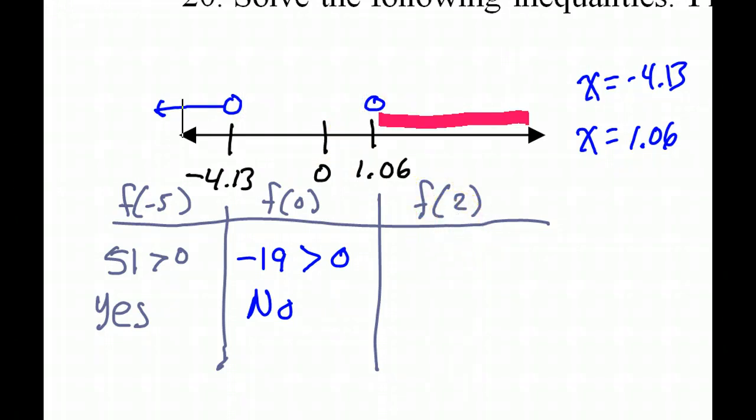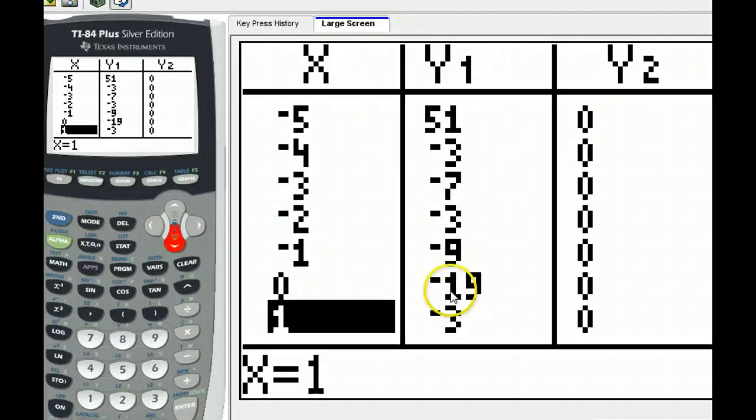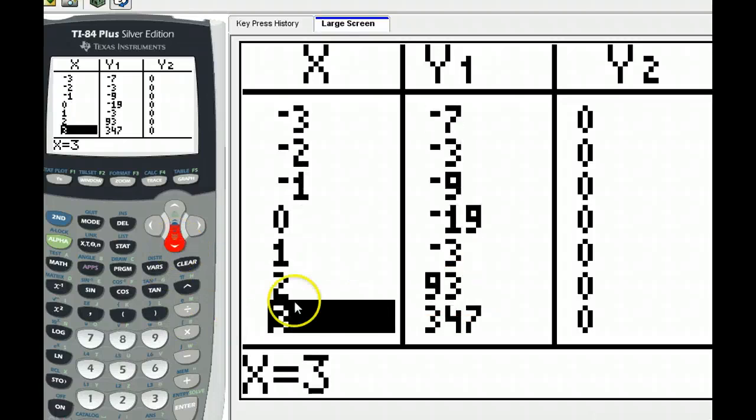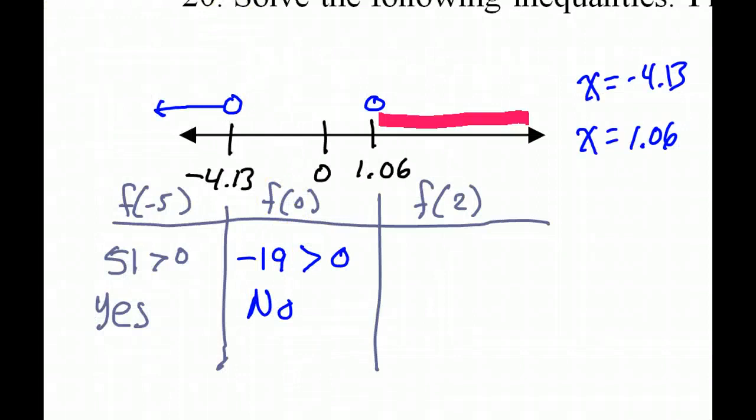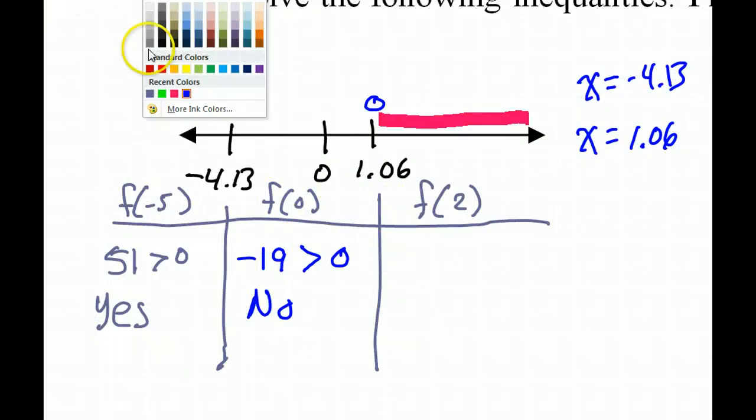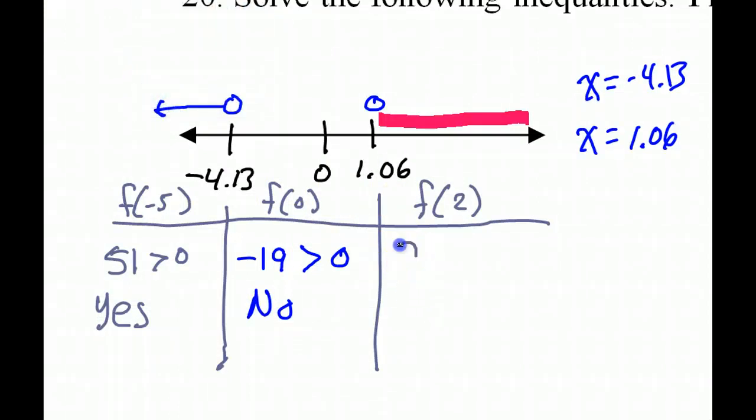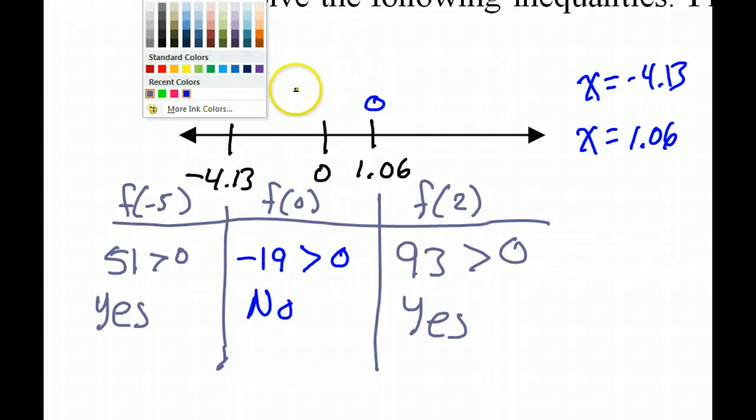And then I'll look at the value at 2. Okay, so I'll look at 2. The value at 2 is 93. Okay, so 93. And again, the question is, is that greater than 0? Yes, it is. So that means all of the pink values are solutions. And we'll show that by drawing an arrow. All right, because all of these are solutions. So this is the graph of the solution set.